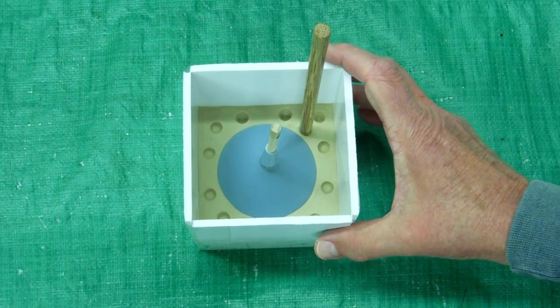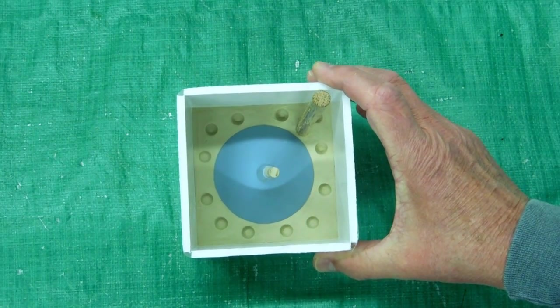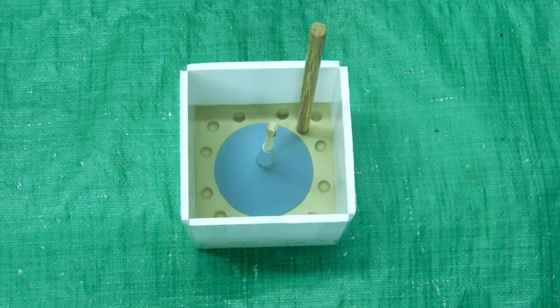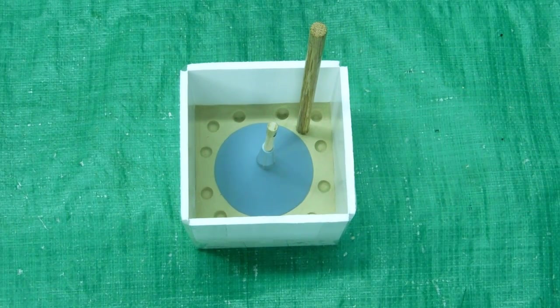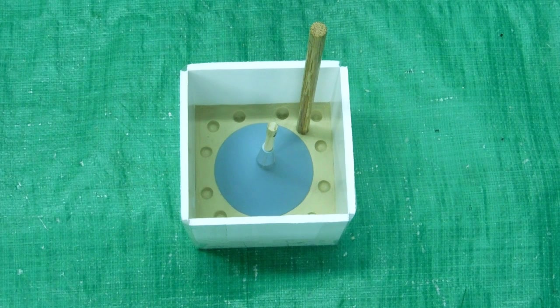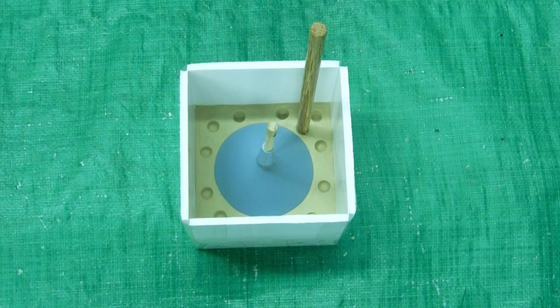So I had a funnel about the size I wanted. We're going to cast silicone in here, then we'll cast the other side, then we will use the silicone mold to make the silicone funnel.